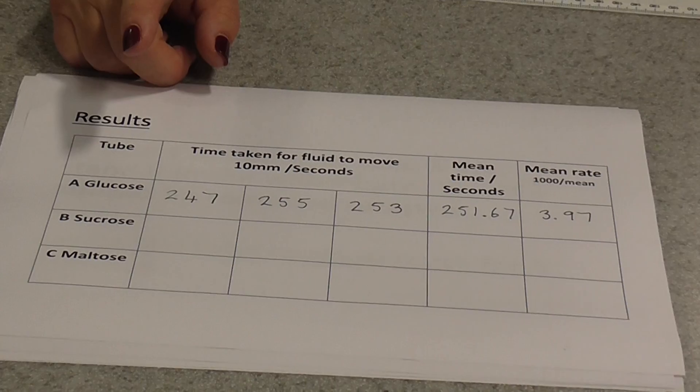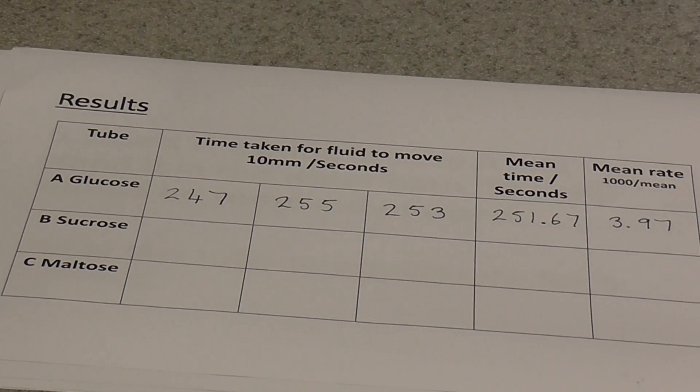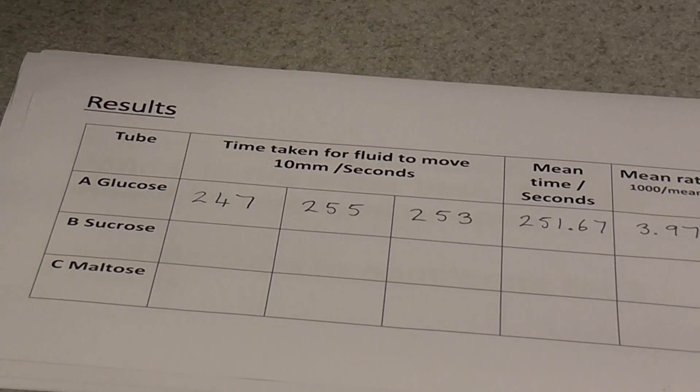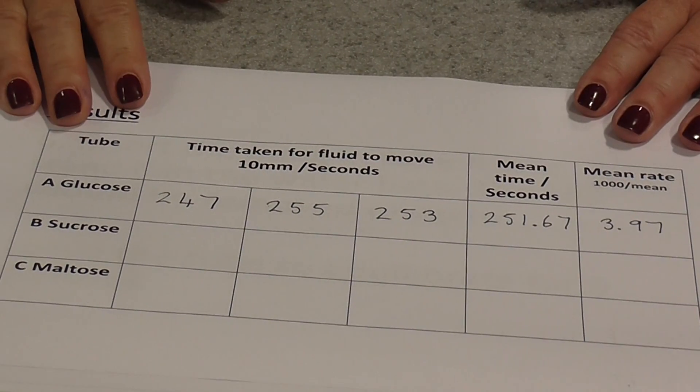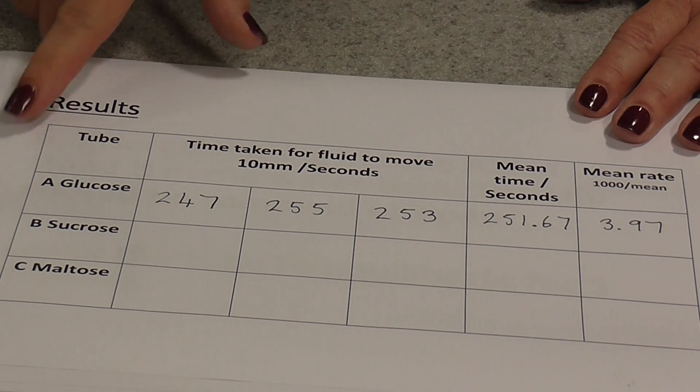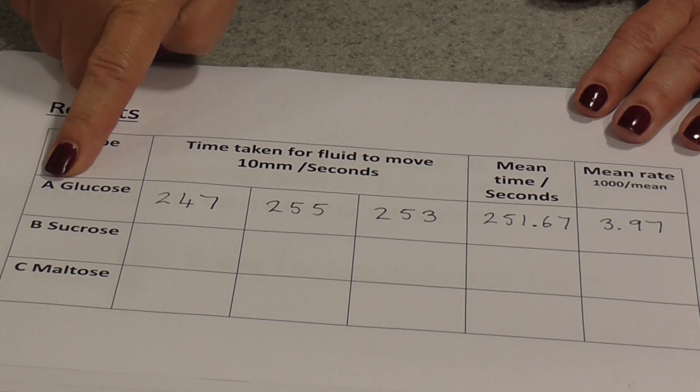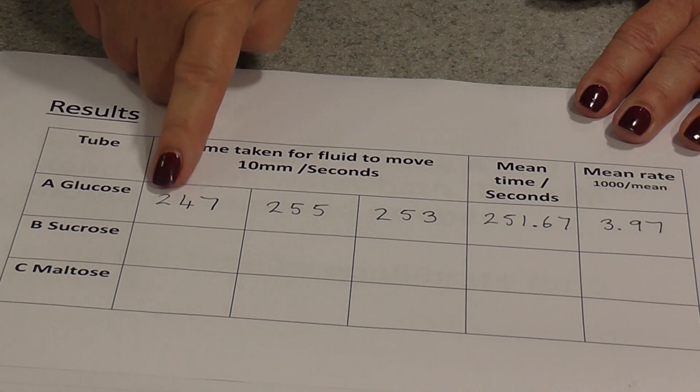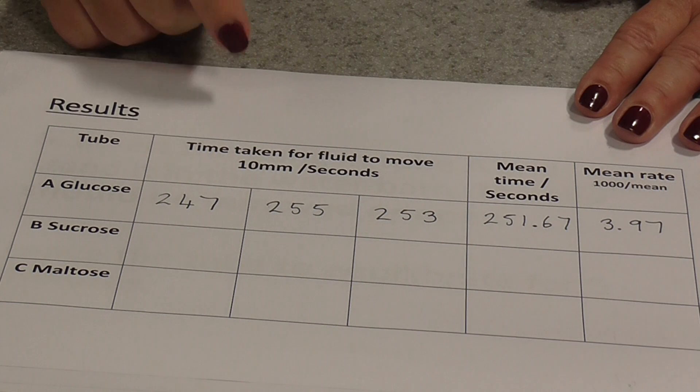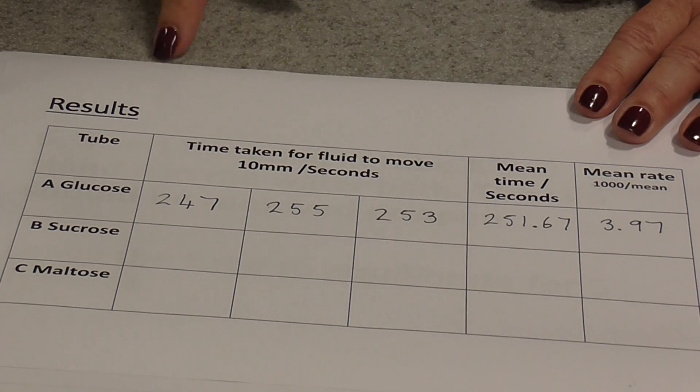Now, once you've done this, you can actually loosen the clip, and that should let some air into the apparatus so that the meniscus falls back to its original level, and you can actually then start all over again and repeat the procedure. So, you can see here that I've done this three times for the glucose tube already. The first attempt, it took 247 seconds for the meniscus to move from the original position to the first line. These are my other two repeats.